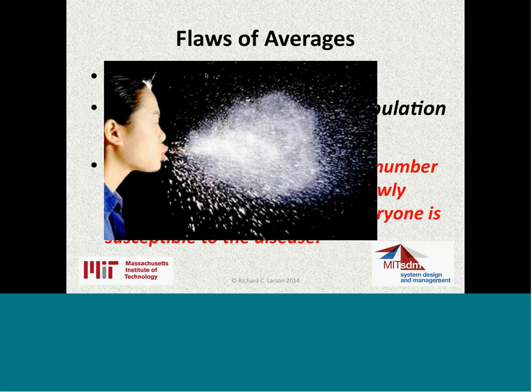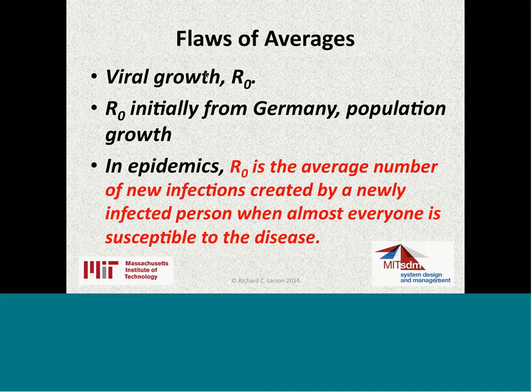Viruses are with us everywhere. R0 is a key parameter — initially defined in Germany in the 1880s as the mean number of baby girls a newly born baby girl would have in her lifetime. If R0 is greater than one, the population grows over time; if less than one, it geometrically decays. Unfortunately, in Western Europe right now, most R0s are less than one. R0 also applies to epidemics: in epidemiology, R0 is the average number of new infections created by a newly infected person when almost everyone is susceptible to the disease.